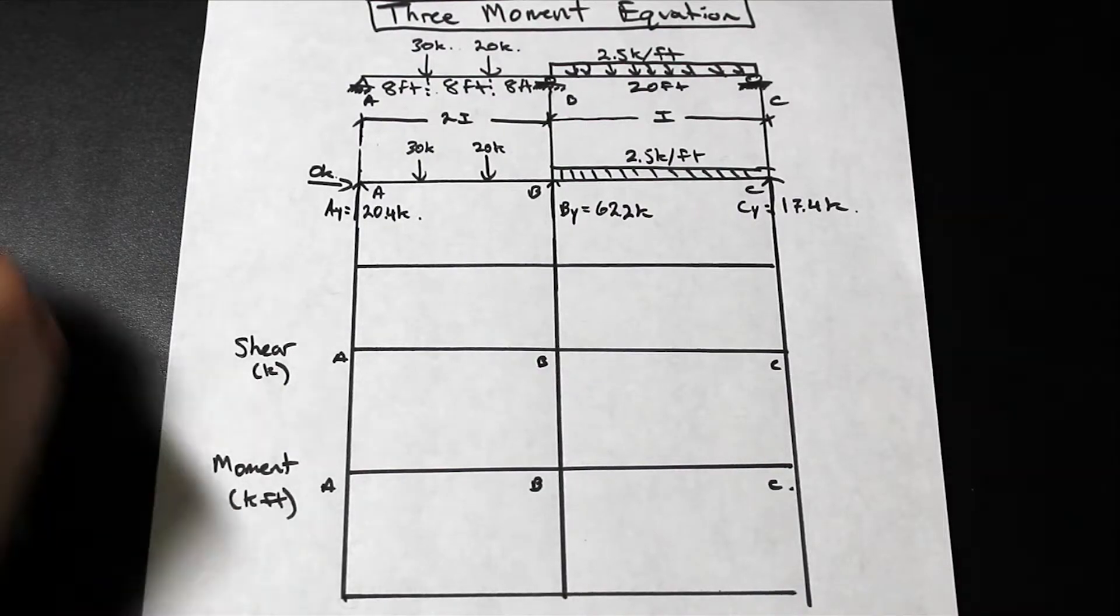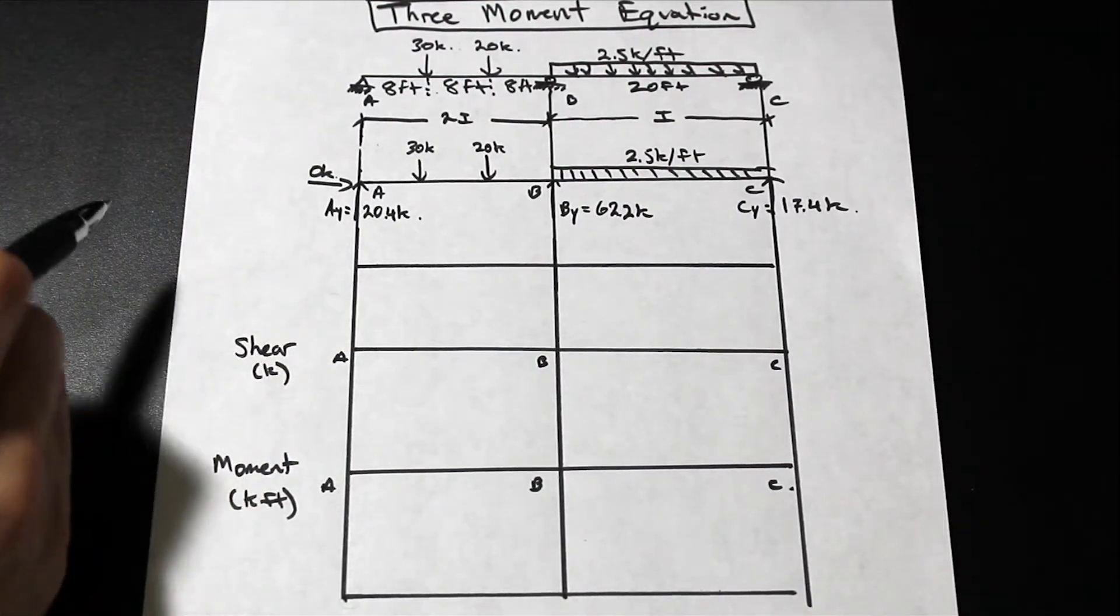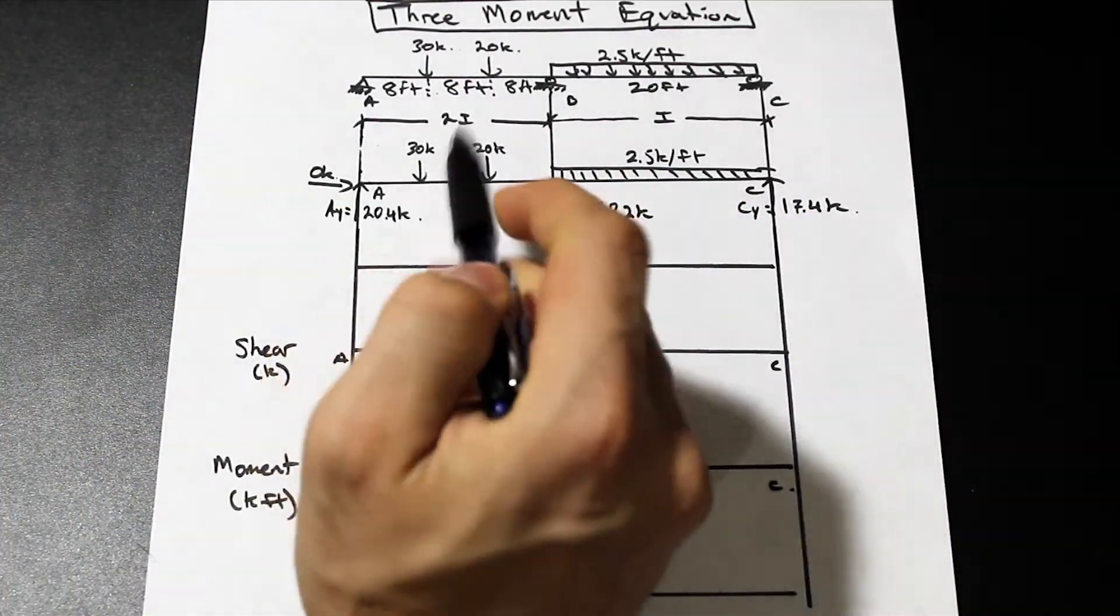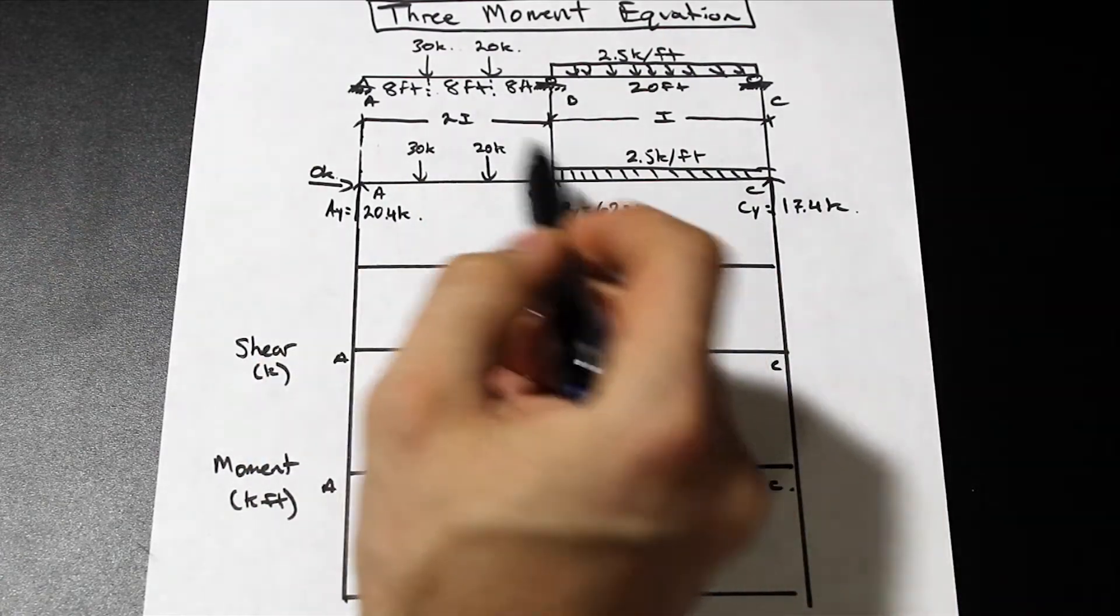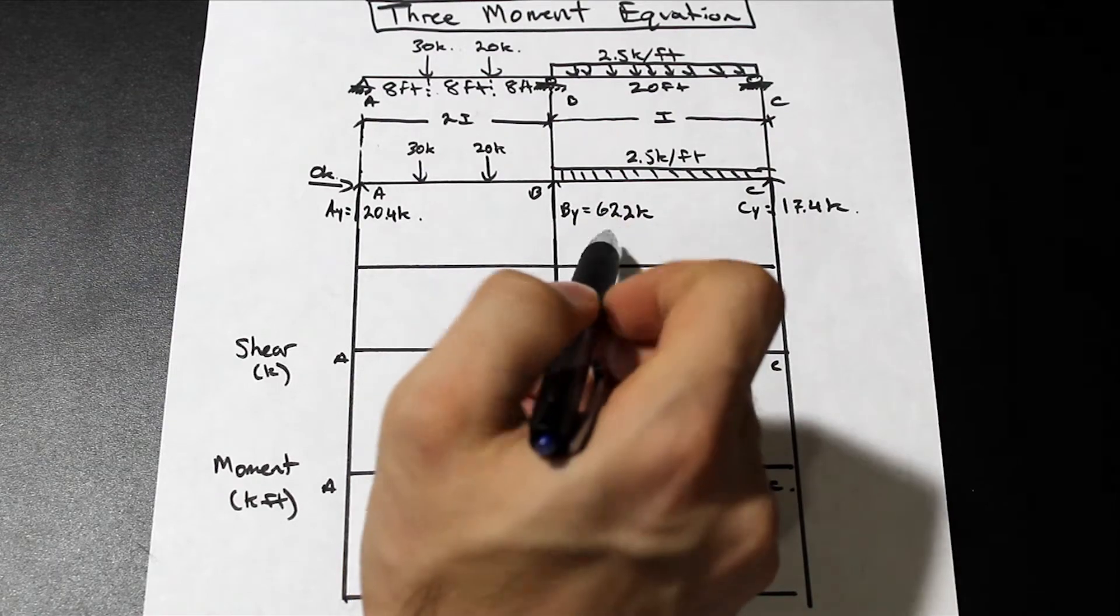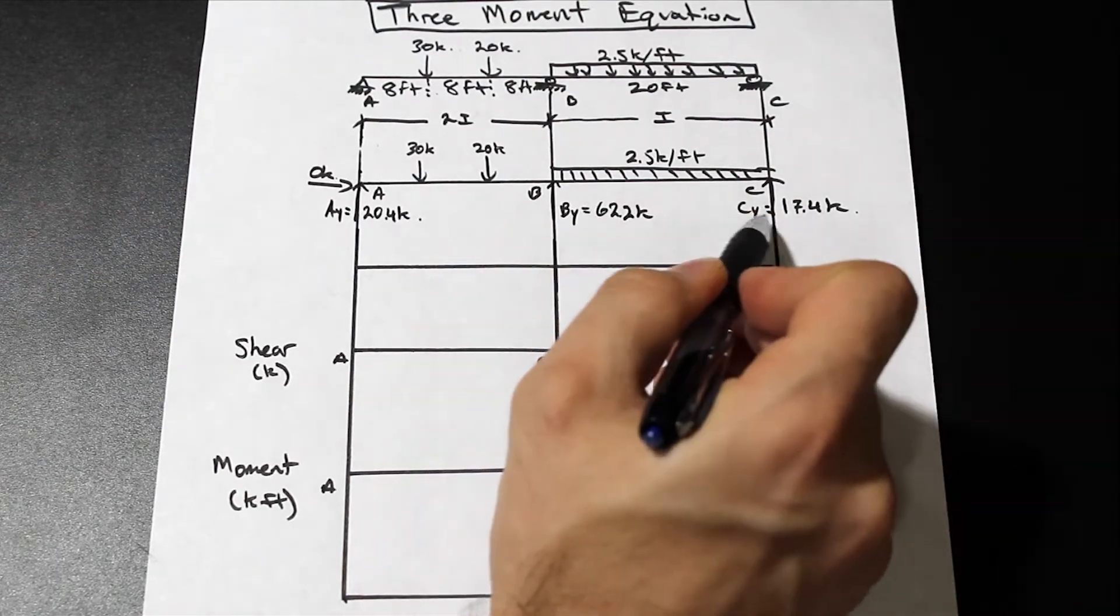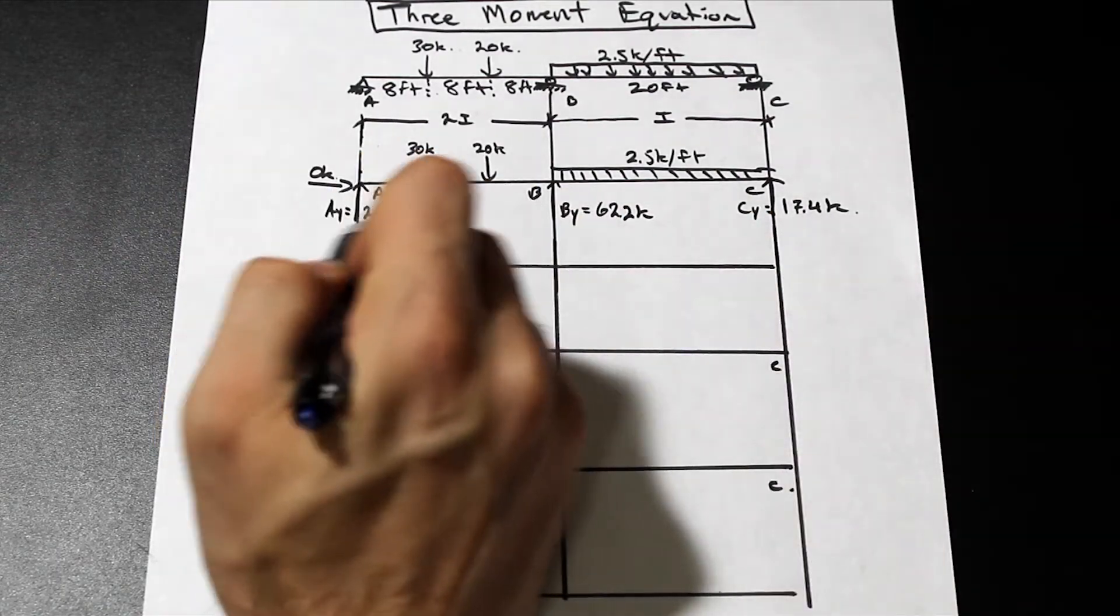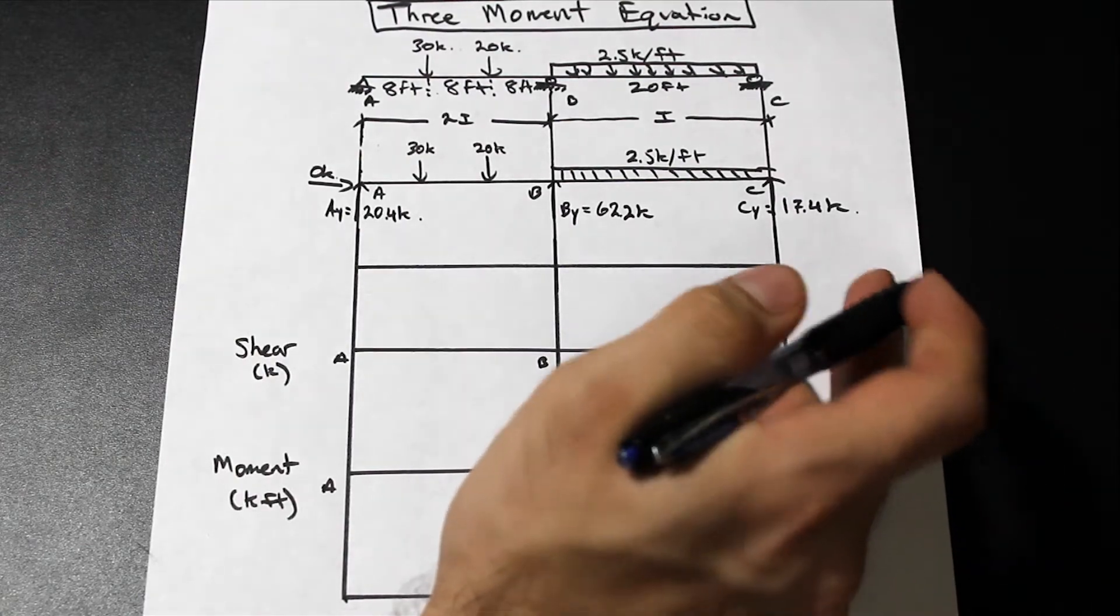Alright, so let's take a look. If you'll recall, link in the description of the first two parts of this video. We solved for the reactions of this indeterminate beam, the first degree indeterminate beam using the three-moment equation, and we arrived at By is 62.2 kip and Cy is 17.4 kip with Ay is 20.4.